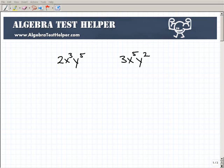A lot of students get these properties confused. I'm not going to go over everything, but I'll cover some common scenarios that you'll definitely face in algebra. Here I have two terms: 2x³y⁵ and 3x⁵y², and let's do some things with them.